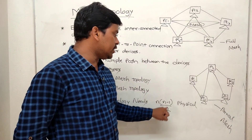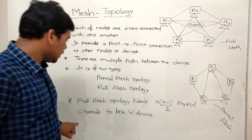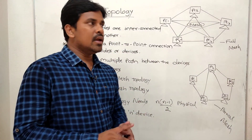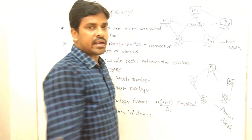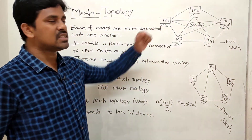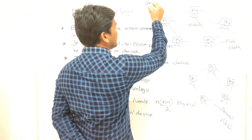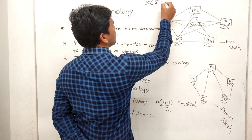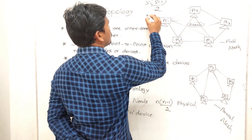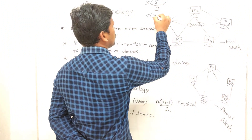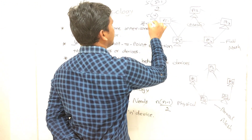Full mesh topology requires n × (n−1) / 2 physical channels to link n devices. For example, if n = 5, then 5 × (5−1) / 2 = 5 × 4 / 2 = 20 / 2 = 10 physical channels are required.